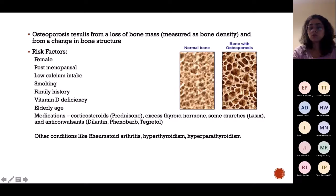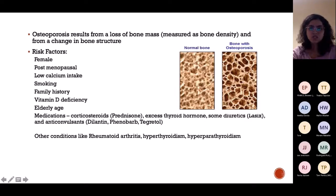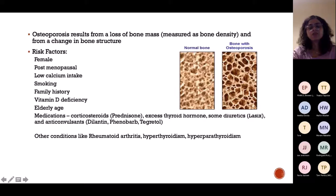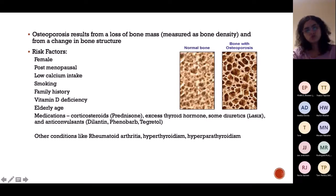Osteoporosis results from loss of bone mass — bone mineral density is decreased significantly. On imaging, normal bone appears full but osteoporotic bone is hollow and spongy. Risk factors include female gender, postmenopausal status, low calcium intake, smoking, family history, vitamin D deficiency, elderly age, and medications such as steroids, excess thyroid, diuretics, and anticonvulsants.